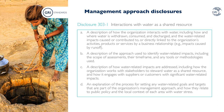Disclosure 303-1 further requests organizations to describe how water-related impacts are addressed, including how the organization works with stakeholders to steward water as a shared resource and how it engages with suppliers or customers with significant water-related impacts. It also covers the process for setting any water-related goals and targets that are part of the organization's management approach, and how they relate to public policy and the local context of each area with water stress. When disclosing this information, it is important that organizations disclose it for the full value chain and not only direct operations.